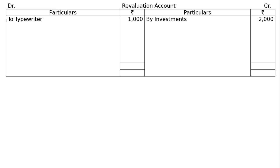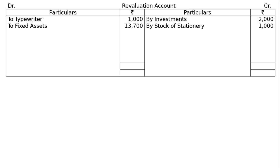Fixed assets by 10%: fixed assets are Rs 1,37,000. To fixed assets that is Rs 13,700, which is 10% of Rs 1,37,000. An unrecorded stock of stationery on 31st March 2017 is Rs 1,000 — that is an increase in asset by unrecorded stationery, stock of stationery Rs 1,000. It will be shown in the balance sheet of the new firm. The totalling is Rs 14,700 on the debit side. Take it to the credit side minus Rs 3,000. Rs 11,700 will be the loss.